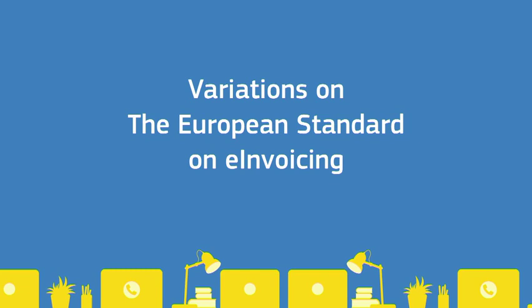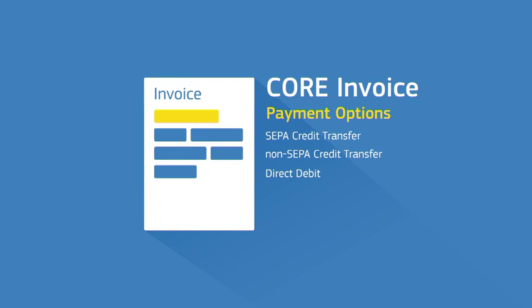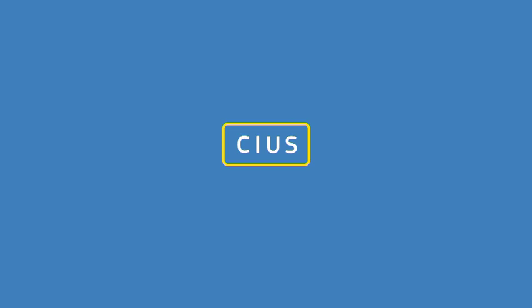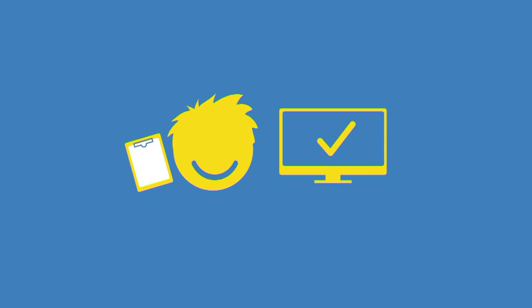Let's examine the first variation, in which options are being removed. Some information elements in the core invoice allow for options. For example, regarding payment instructions, the core allows for multiple payment options including a separate credit transfer, non-separate credit transfer, direct debit, or the element can be left empty since in some cases the payment method is defined in the contract. Now suppose Dimitri needs to limit these options to only allow separate credit transfers to ensure he conforms with some legislation. This means Dimitri implements a restricted version of the standard, called a Core Invoice Usage Specification, or CIUS for short. Because this CIUS uses just one of the options provided by the core, it falls within the European standard and therefore Dimitri is fully compliant. The invoice can be processed by anyone that supports the standard without restrictions.